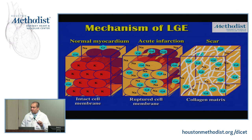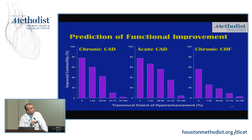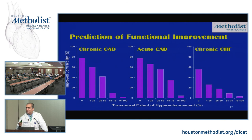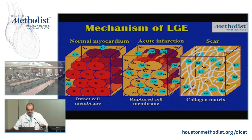The positive predictive value is much lower in the medical therapy-only group, which raises questions about remodeling. This tells us that revascularization therapies are more robust than beta-blocker therapy alone.